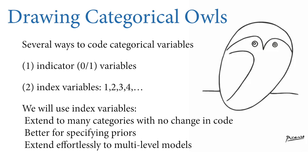Index variables are also better in most cases for specifying priors: with index variables, it's easier to assign scientific information to each category's prior. Additionally, in the second half of the course when we learn multi-level models, index variables very naturally describe clusters in the data — like locations or batches.